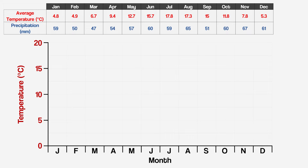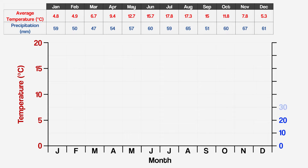Climate graphs have a second y-axis. This is the one that we're going to use to show precipitation. It looks like the largest number we have here is 67 mil, so I think this y-axis can go up to 80, ten at a time. And yep, better label it.